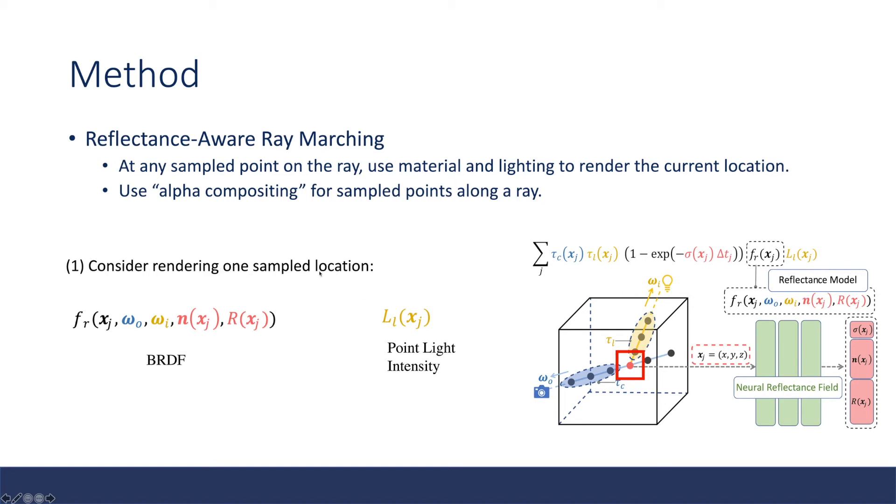Let's consider the first part. We want to render one sample location at this red point, this red box. As we know, the radiance should be the BRDF times the lighting intensity. But we need to be careful about one thing: we still need to know the visibility of this point light. To compute the visibility, we shoot a ray to the point light and compute the transmittance along this ray.